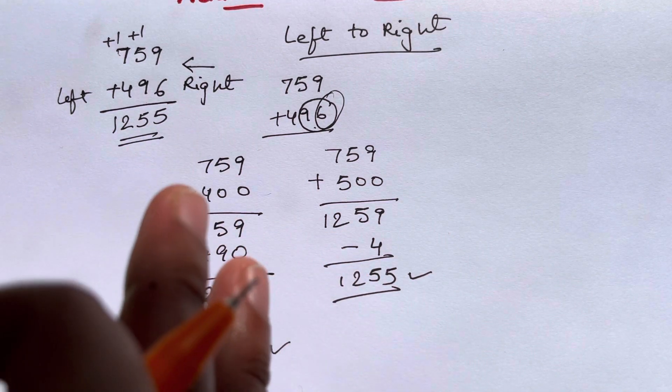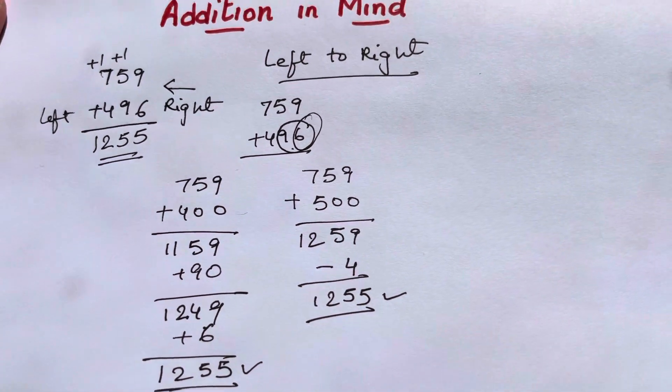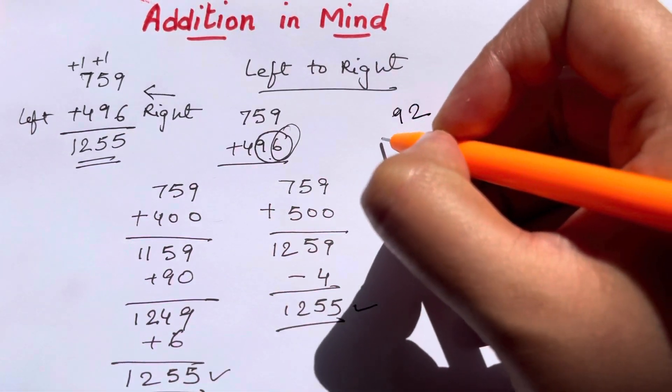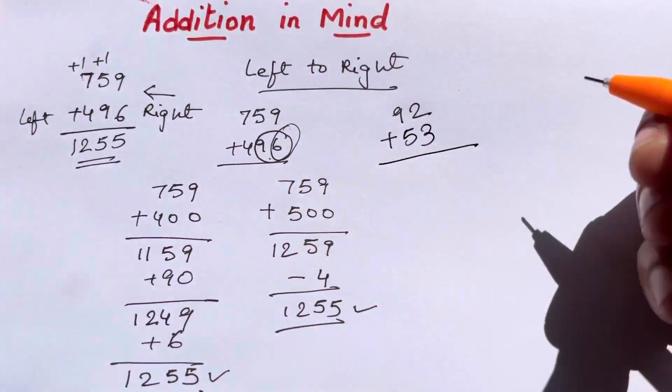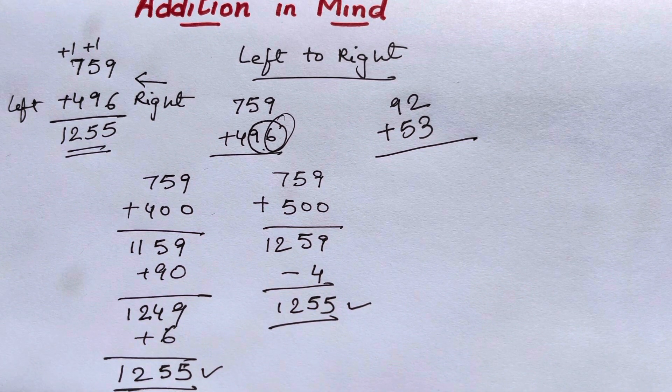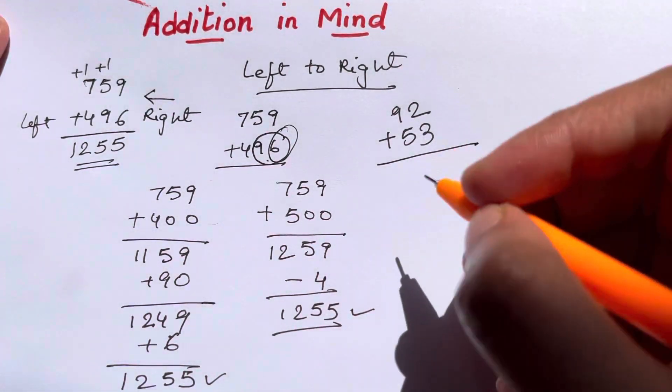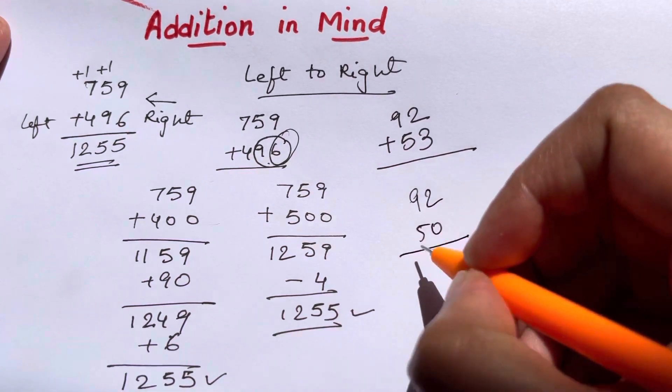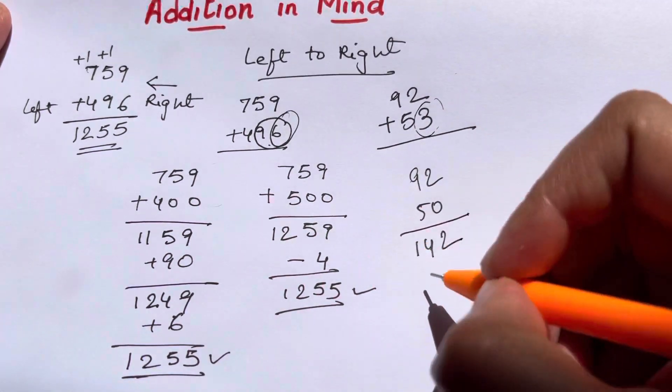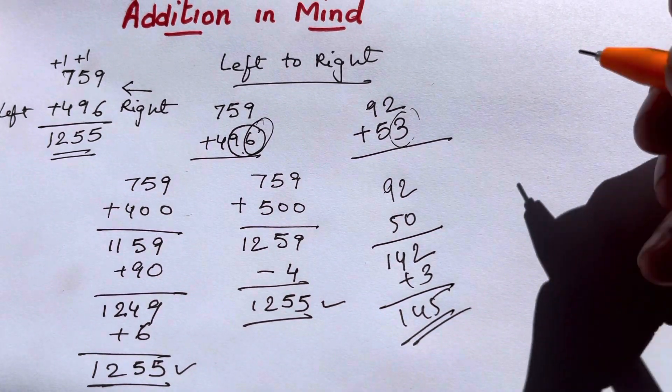Let us do some other example. If you have 92 plus 53, I'm explaining it in such a way that you understand, and this needs practice. 92 plus 53 - what are you going to do? 92 plus 50 quickly. 92 plus 50 is 142. Now this 3 you're going to add up. 142 plus 3 is 145. This is what you're going to do in mind.